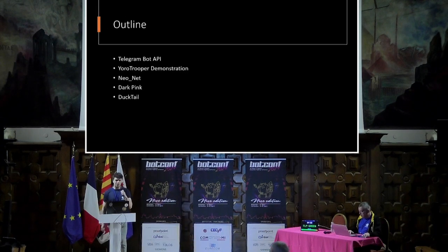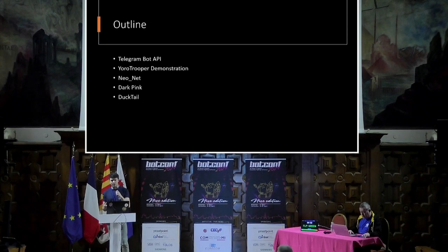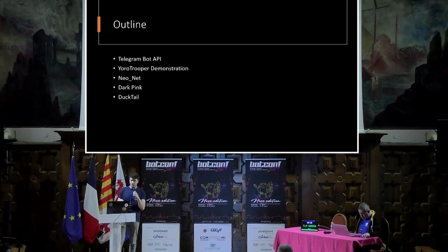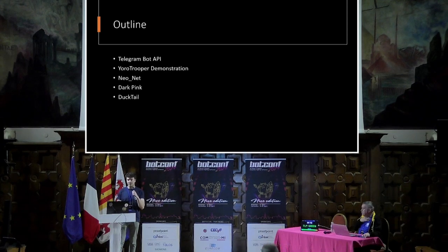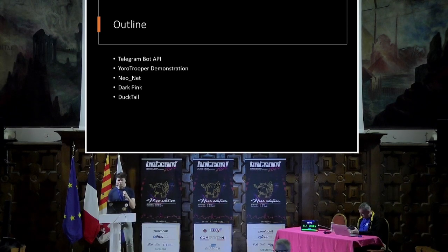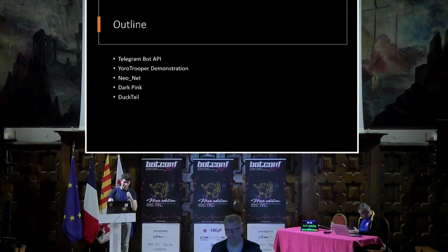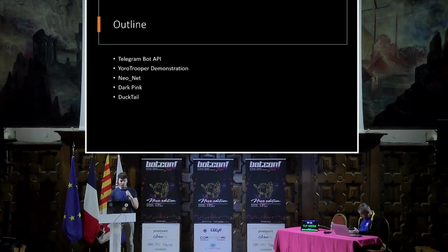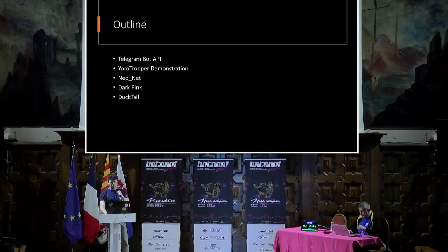The outline for this talk: we'll start with a short explanation about the Telegram bot API — how it works, what it's used for, how threat actors use it, and how we can use it as well. Then we'll give a short demonstration on EuroTrooper, which is an APT that uses this technique in their toolset, and we'll show how to retrieve data from victims they infected. Then we'll go into three case studies — Neonet, DarkPink, and DuckTail — each of which use Telegram as a C2.